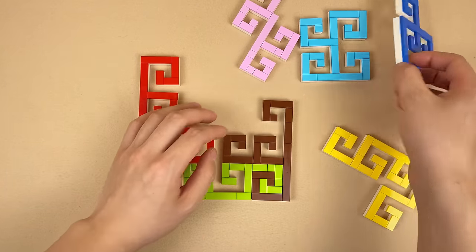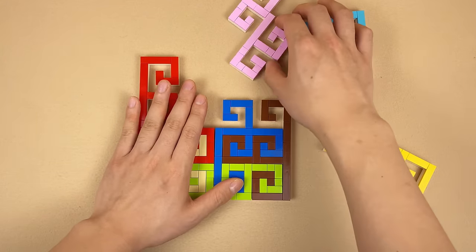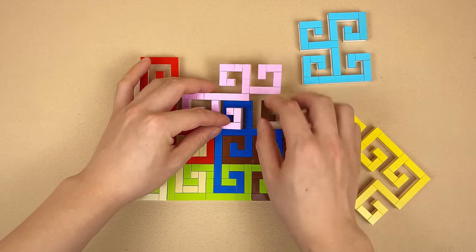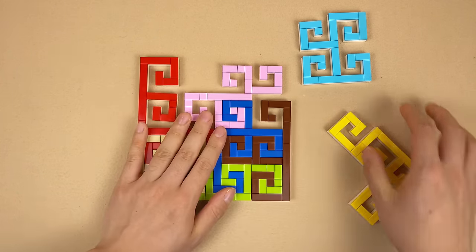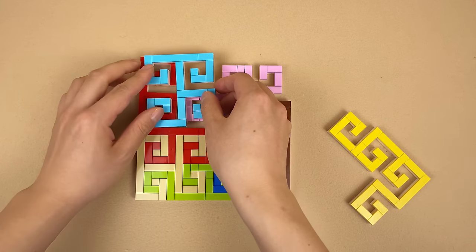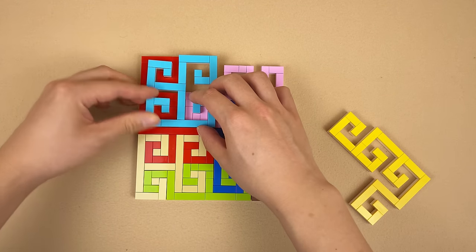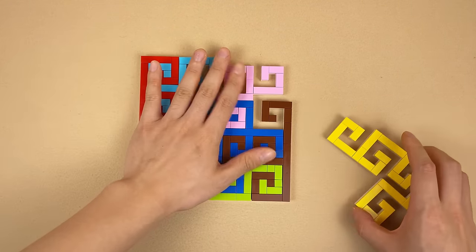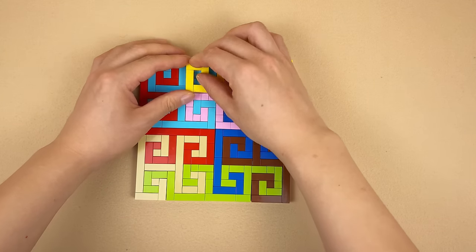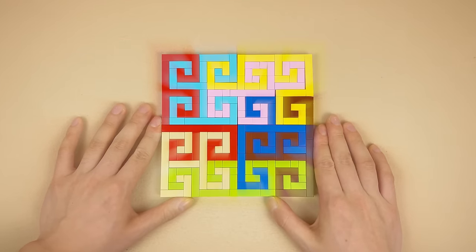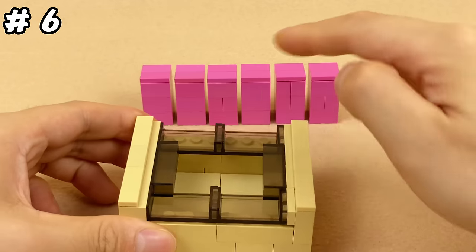Brown one goes to here, the blue one goes to here, the pink one is right above, and the light blue one you may rotate it to find the correct way, and finally the yellow one. Now the puzzle is solved.